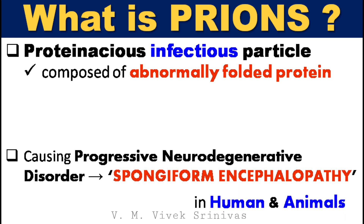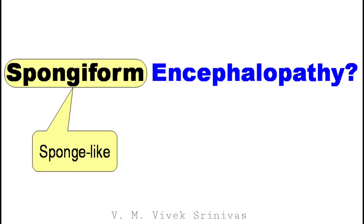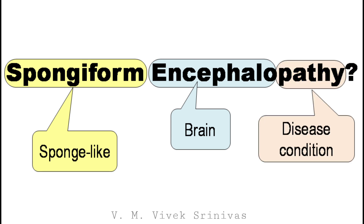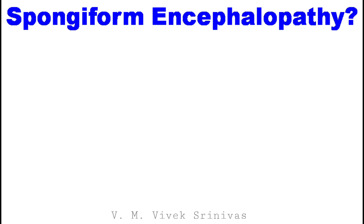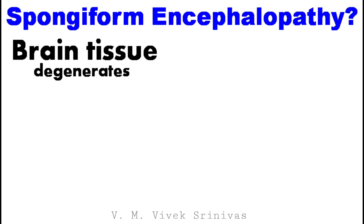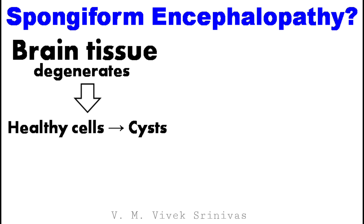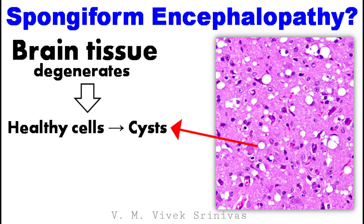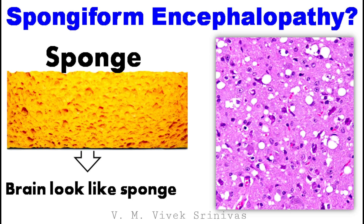This abnormal protein causes progressive neurodegenerative disorder named as spongiform encephalopathy in humans and animals. The word spongiform means sponge-like, encephalo means brain, and pathy means disease condition. So this disease condition causes a sponge-like brain. In this infection, brain tissue degenerates and the healthy cells are replaced or occupied by cysts, which make the brain look like a sponge.